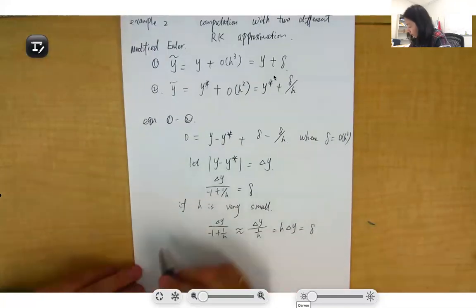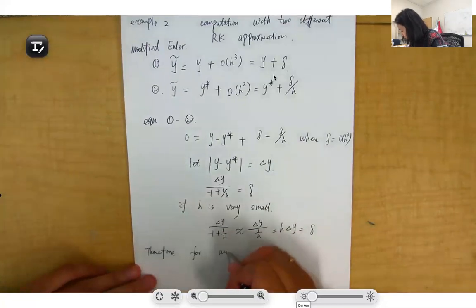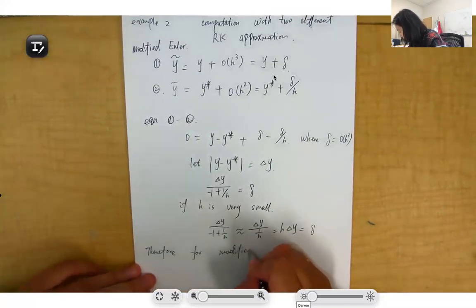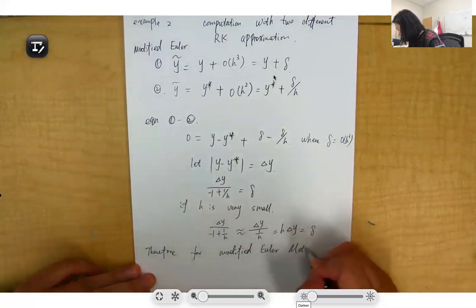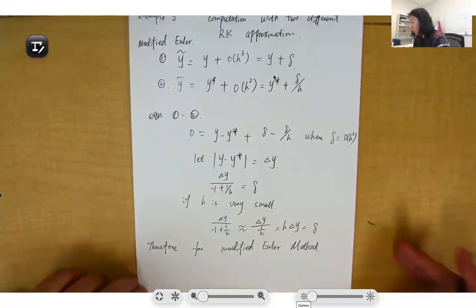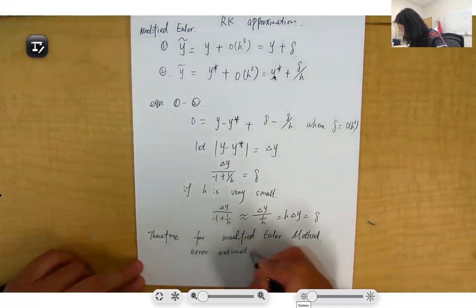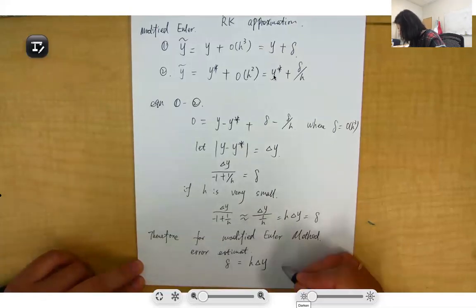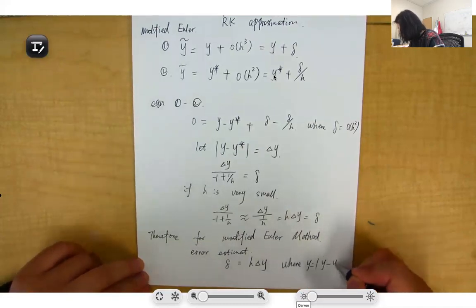Therefore, for the modified Euler's method, or you can say a combination of Euler's method and modified Euler's method, the error estimate is σ = h·Δy, where Δy equals modified Euler minus Euler.